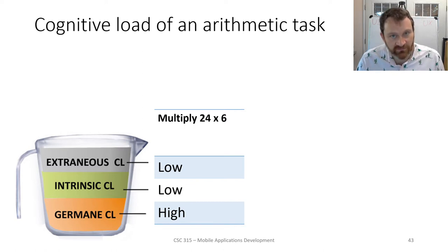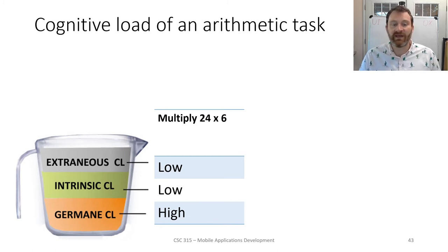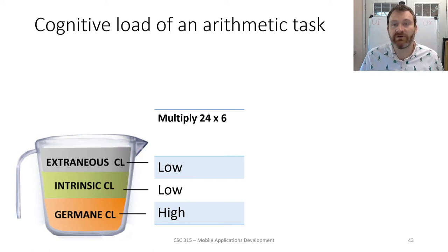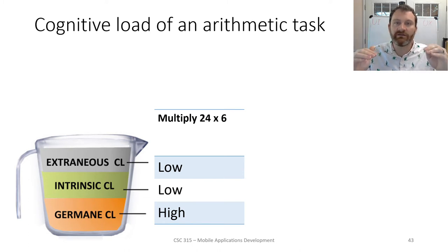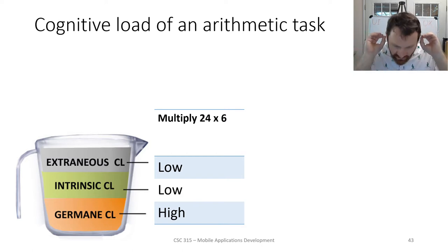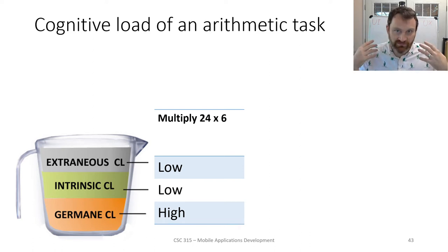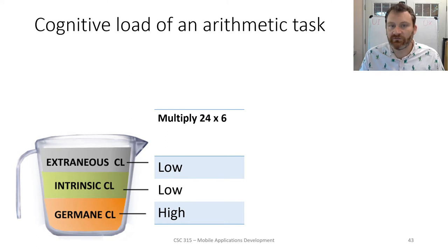So the germane cognitive load becomes high, and that's a good thing. Your working memory, your brain power devoted to this task, is spent entirely on solving the problem, on completing the task. That's good. Because if the extraneous and intrinsic cognitive loads are low, you can devote all your mental energy to solving the problem quickly. You'll be able to do it quickly, error-free — you can just do the task, and that is your focus.